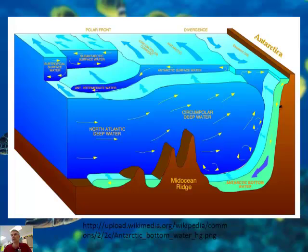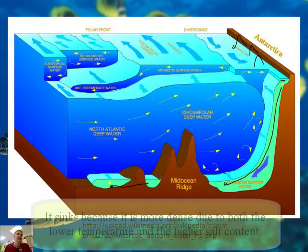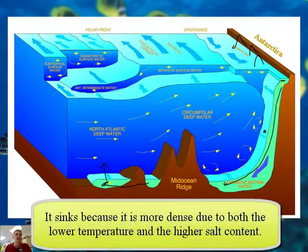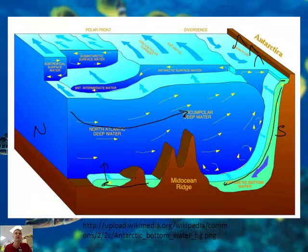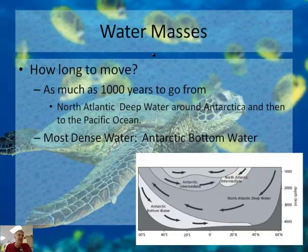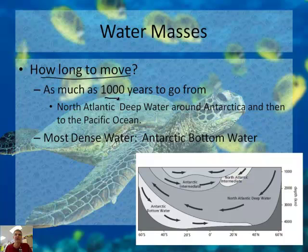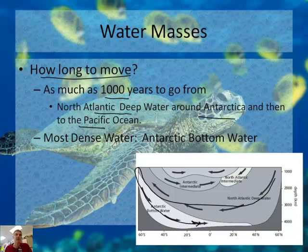This picture shows super cold water forming because of icebergs on the surface — it sinks down and eventually rises somewhere. In the south we have Antarctic Bottom Water, and in the north the North Atlantic Deep Water making the same process, with intermediate waters mixing in between. It can take as much as a thousand years for water to travel from the North Atlantic Deep Water around Antarctica and then to the Pacific Ocean. The most dense water is the Antarctic Bottom Water because of its high salinity and cold temperatures.